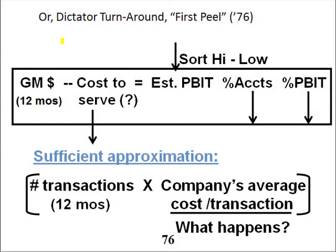Hi. In this slide, I want to share a story with you of a turnaround I did in 1976. Rather than being able to invest in line item profit analytics, what could I do on a sort of a peels-of-an-onion, first-peel basis? I was working for a wheeler dealer who had borrowed a lot of money to buy some losing distribution companies.